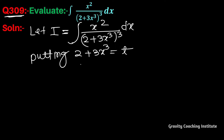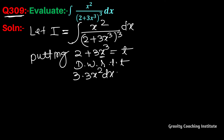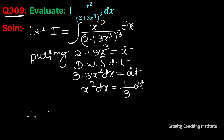Now differentiate with respect to t. The constant term is 0, and the differentiation of x cubed gives 3x squared dx equal to dt. So x squared dx equals 1 by 9 dt. Therefore I equals integration of 1 by t cubed with x squared dx replaced by 1 by 9 dt.